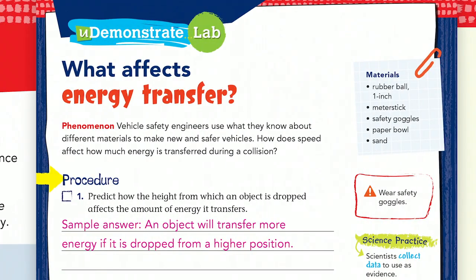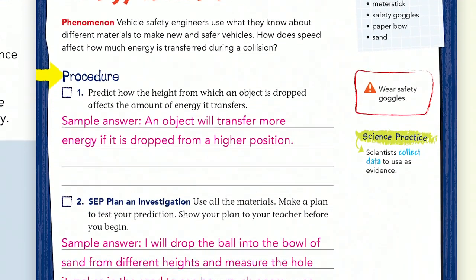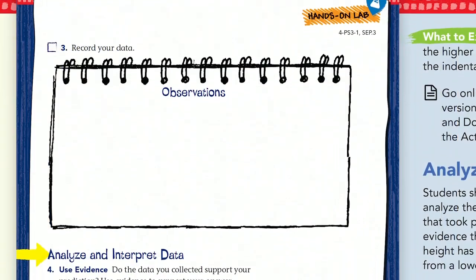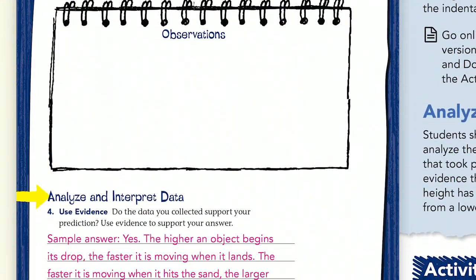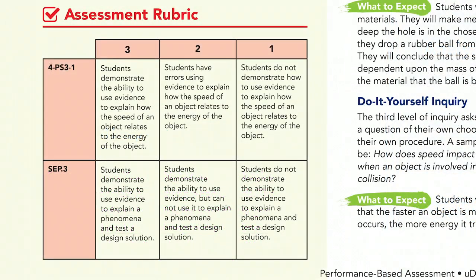What about implementing an evaluation that focuses on the doing of science? Performance-based assessments are a proven way to assess a student's ability to apply skills and concepts learned during a unit of study. uDemonstrate labs, found at the end of each topic in Elevate Science, provide students the opportunity to plan an investigation, collect data, and analyze that data to determine whether or not their initial claim or hypothesis was supported. Rubrics are also provided to help guide and assess student work.